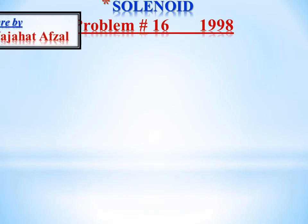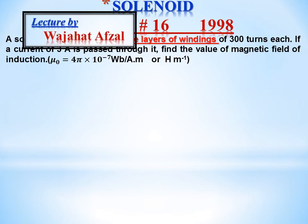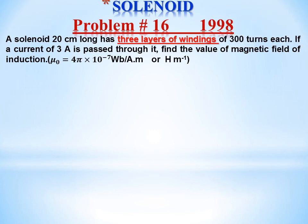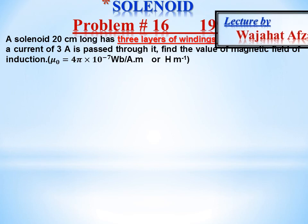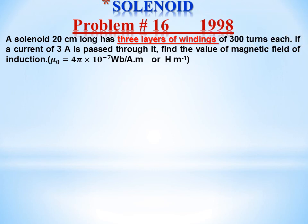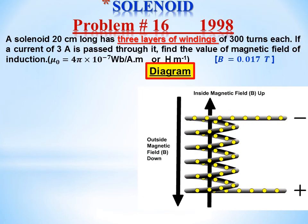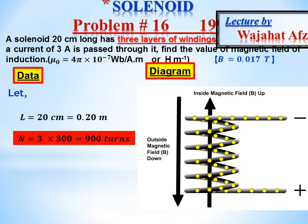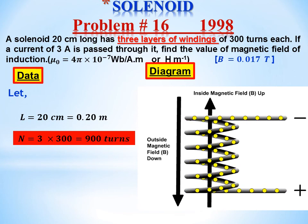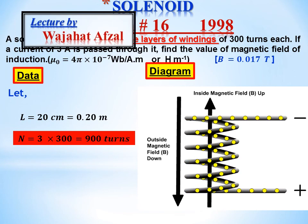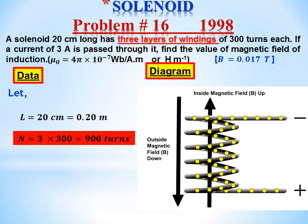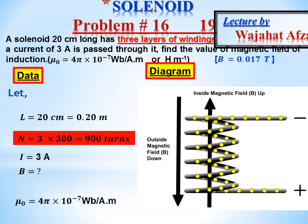Problem number 16: A solenoid 20 cm long has three layers of winding — 300 turns per layer — giving a total of 900 turns. A current of 3 ampere passes through it; find the magnetic field of induction B. Data: length L = 20 cm = 0.2 m; total turns N = 3 × 300 = 900 (important — multiply layers by turns per layer); current I = 3 A. Find B.